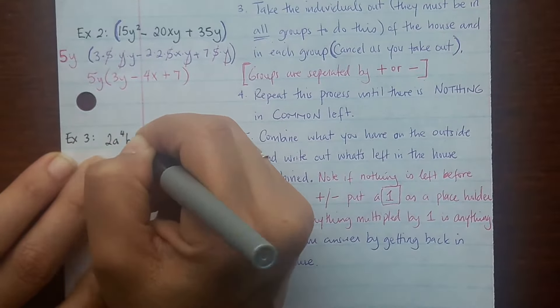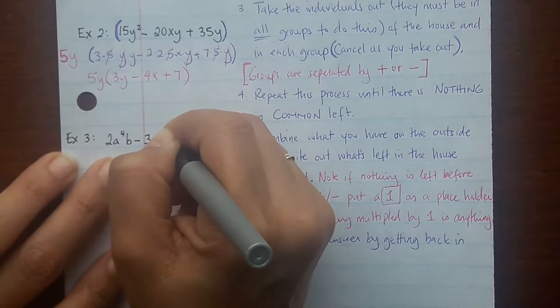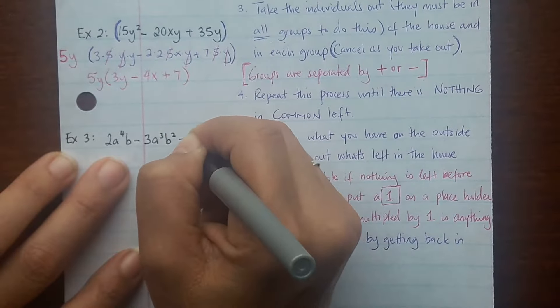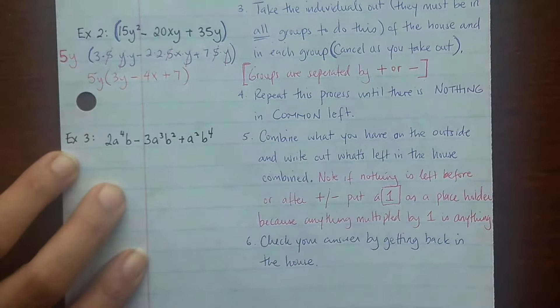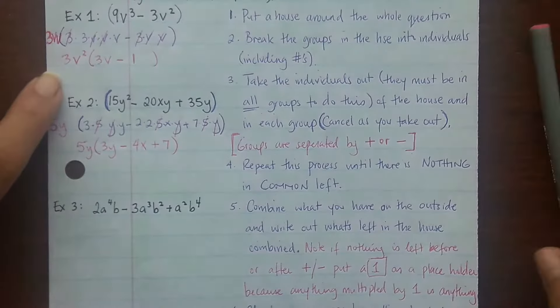Let's take a look at another example. Let's say you had 2a⁴b - 3a³b² + a²b⁴. Alright, so first things first, put a house around the entire question.